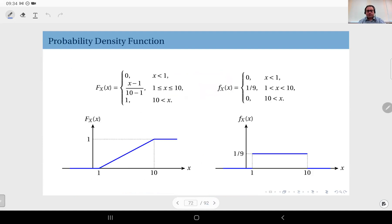So now let's look at the same example and how we obtain the PDF. Here you see our CDF was this function: between negative infinity and 1 it was 0, and beyond 10 it's 1, and in between it's a linear function (x minus 1) divided by 9.